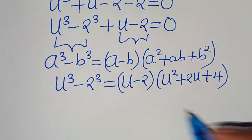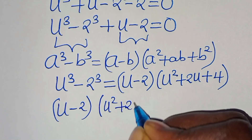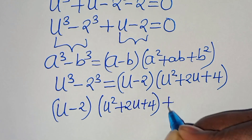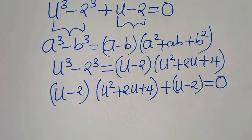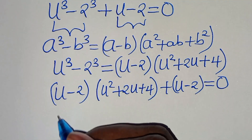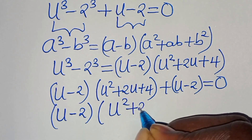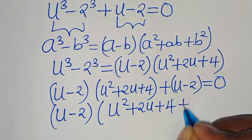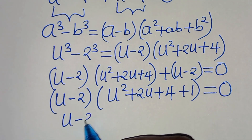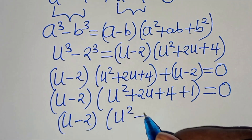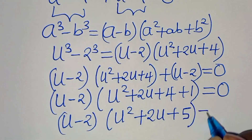Substituting this back into the equation, we have (u minus 2)(u squared plus 2u plus 4), then plus (u minus 2), this is equal to 0. Now, factoring out (u minus 2), we have (u minus 2) into the parenthesis (u squared plus 2u plus 4 plus 1), which gives us (u minus 2)(u squared plus 2u plus 5), this is equal to 0.